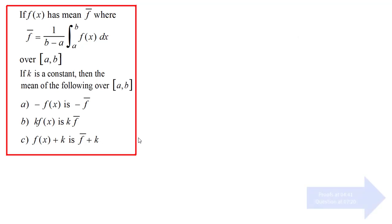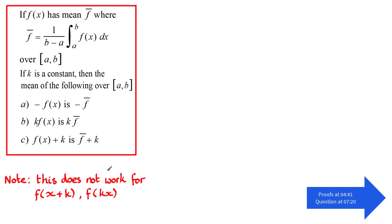I've left out two other transformations that you might be familiar with, but they do not work for this type of exercise. That is, they do not work for f of x plus k and f of kx. Now what I want to do is demonstrate this graphically, and also show you how to prove these results. There's a question at the end that you might like to try.